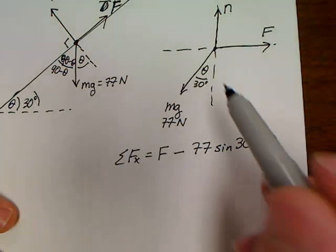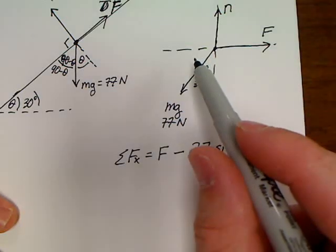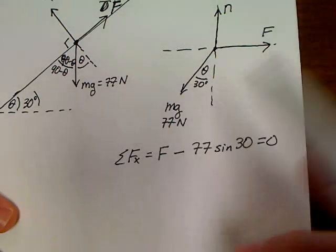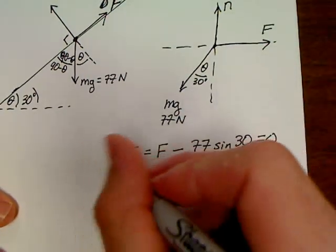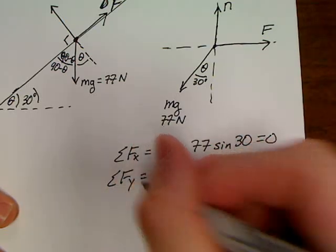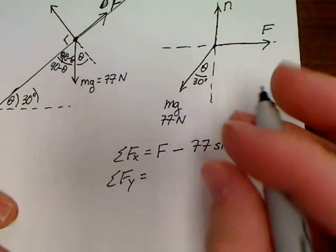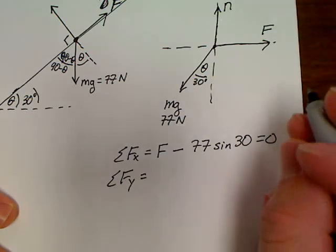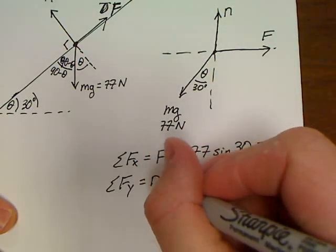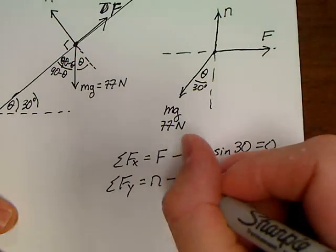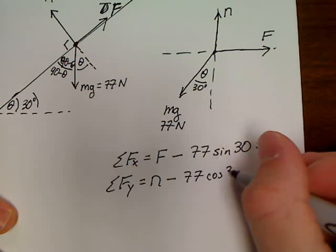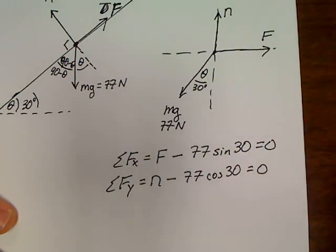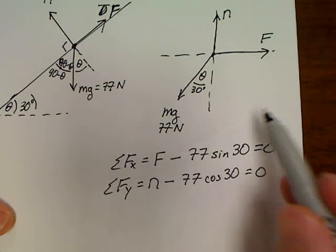Did you have to do it this way? Nope. You could have said, well, if that's 30, then this is 60, and did the cosine of 60, if you'd wanted to. But I do have a reason for working it like this, that you'll see later. Sum of the forces y would be equal to, let's see if we can get this value here. We've got n directed straight up, n, and then minus 77 cosine 30, zero.